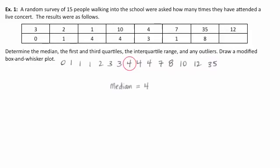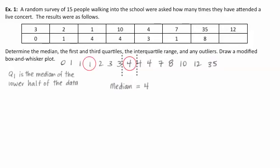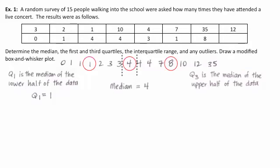The median of this group, counting inwards to the middle value, is 4. Then we take the lower range and the higher range to determine the first and third quartiles. The dashed lines give us the lower and upper halves of the data. Q1 is the median of the lower half of the data, which equals 1. Q3 is the median of the upper half of the data, which equals 8.